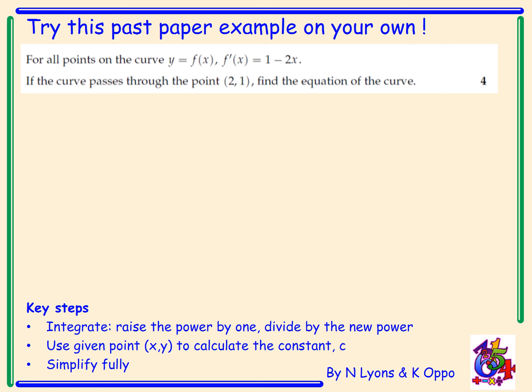Now try this past paper example on your own. For all points on the curve y equals f(x), f'(x) equals 1 minus 2x. If the curve passes through the point (2, 1), find the equation of the curve. This is a 4 mark past paper.